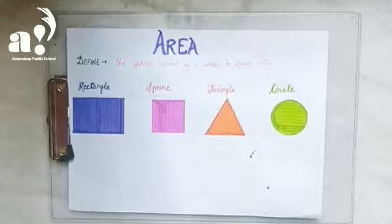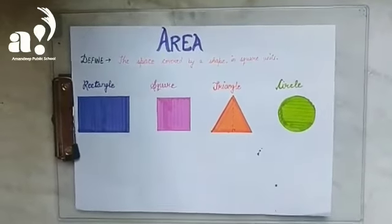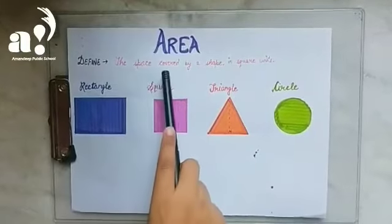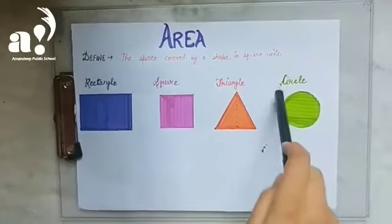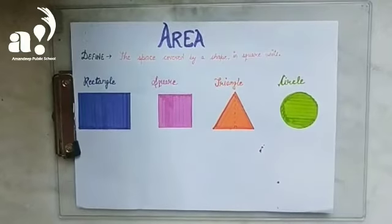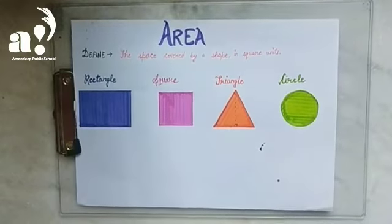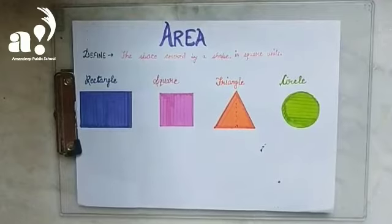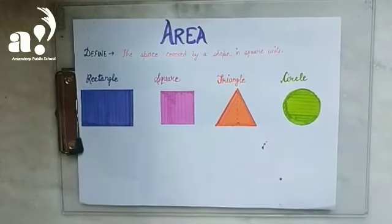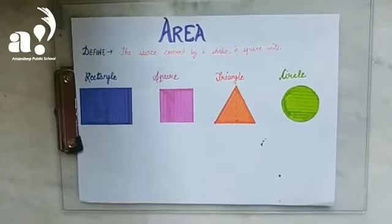Good morning students. In this part of the video we are going to discuss area. The definition of area is: the space covered by a shape in square units is its area. In the previous video we discussed the perimeter of 4 different shapes; in this video we are going to discuss the area of 4 different shapes.